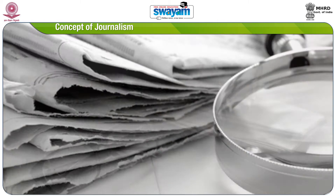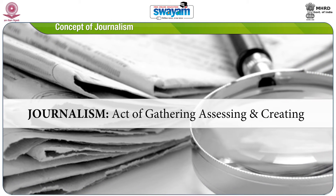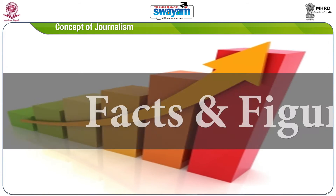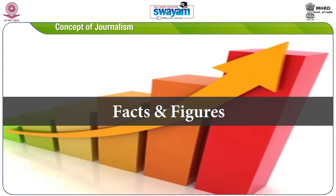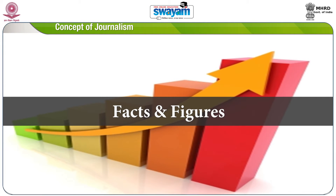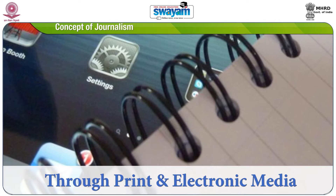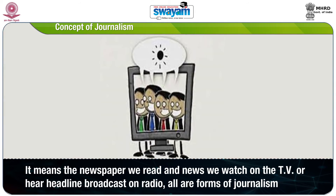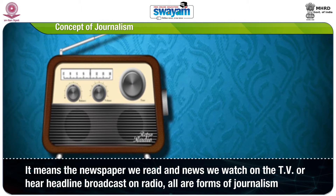Most importantly, people trust only reliable information rather than propaganda, which helps them to make better decisions in their life. The actual definition of journalism itself means gathering, assessing and creating facts and figures about events and issues of the day, and disseminating or presenting this information to society through print and electronic media or live streaming. It means the newspaper we read and news we watch on TV or hear broadcast on radio are all forms of journalism.